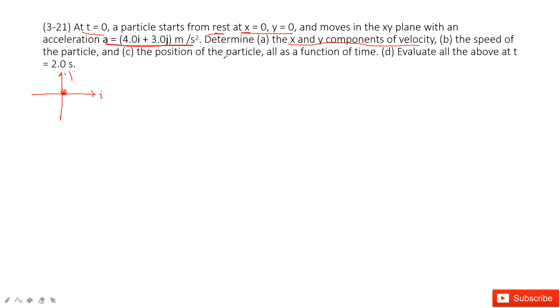We know the velocity is the initial velocity plus the acceleration times t. But we need to pay attention - the acceleration is in two directions, i-direction and j-direction. So ax is 4, ay is 3.